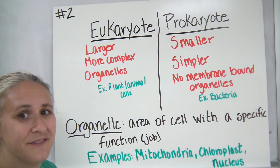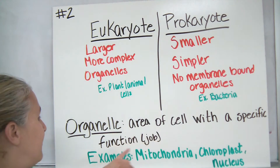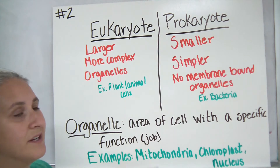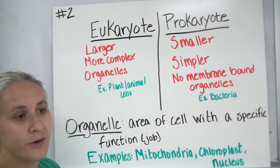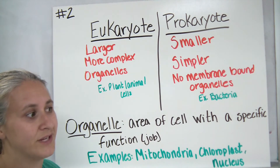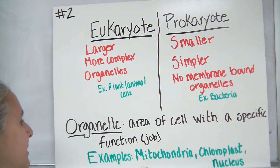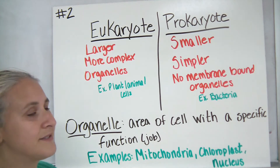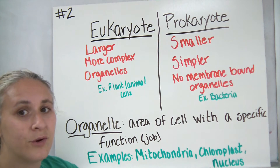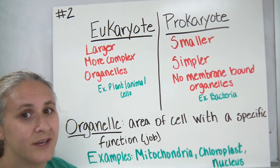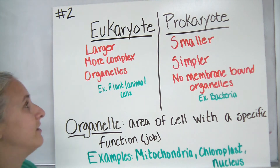An organelle is defined as an area of a cell with a specific function or job. They're kind of like little mini-organs, which is what the translation is. The common examples of organelles that we talk about are the mitochondria, chloroplast, and nucleus. We'll get into others as we move on.